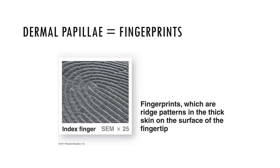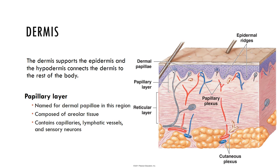The dermis is a strong, flexible layer of connective tissue consisting of two layers: the papillary and the reticular layer. It also has cells such as fibroblasts, macrophages, mast cells, and occasionally white blood cells. The papillary layer is close to the stratum basale and consists of loose connective tissue with elastic and collagen fibers. Its top surface forms the projecting cones which create the dermal papillae that push up into the epidermis, forming our fingerprints.